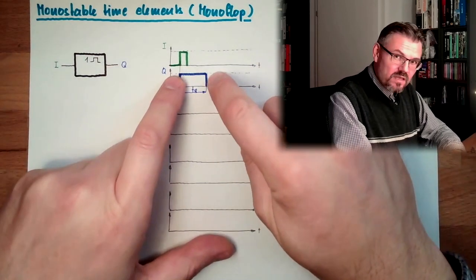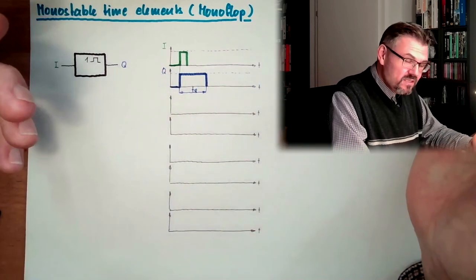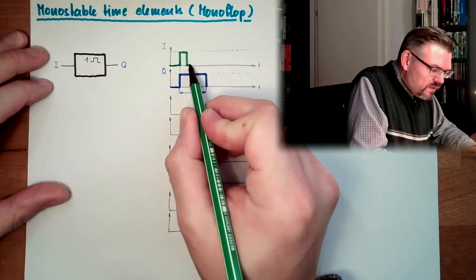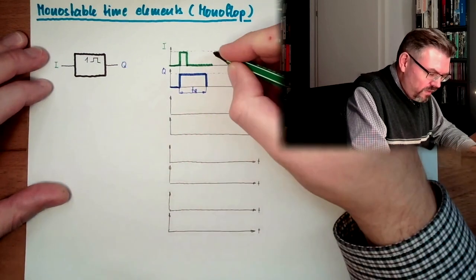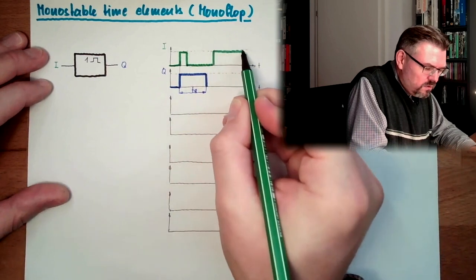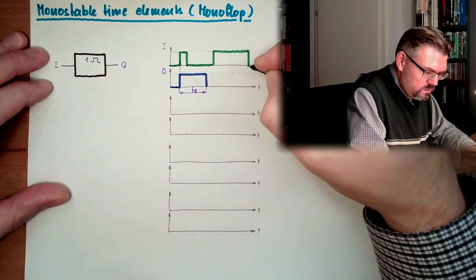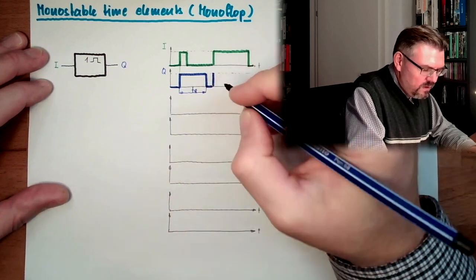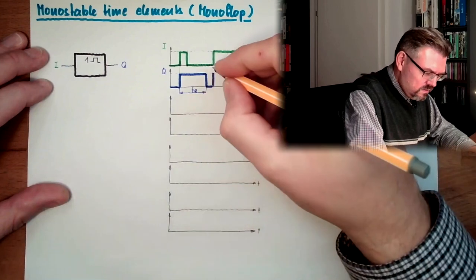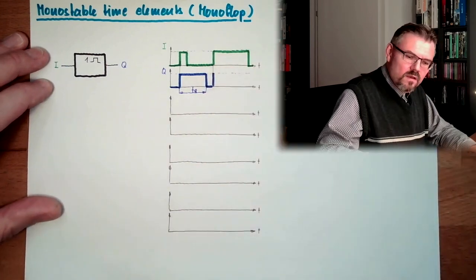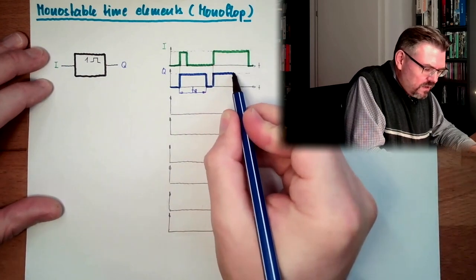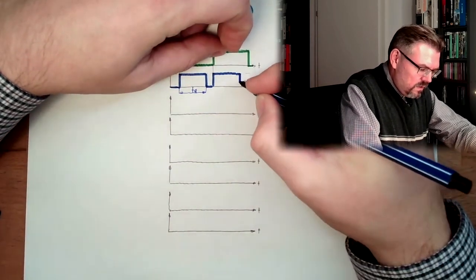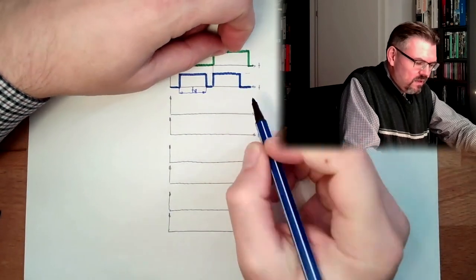So one state is not stable, this will disappear itself, and the other state is stable. And even if we trigger this with a longer pulse at the input, the output here is then again triggered, trigger point, and the output will stay on exactly this amount. Exactly the second time, this dq.